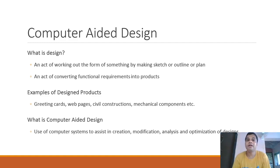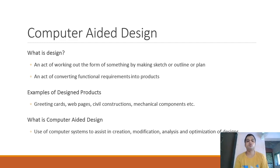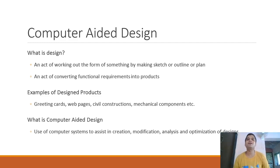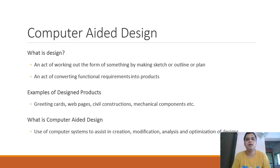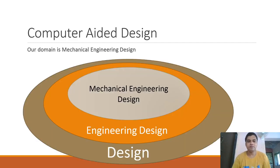Now we come to computer-aided design. Computer-aided design is the use of computer systems to assist in the creation, modification, analysis, and optimization of designs. The word 'aided' means the computer is helping to improve the design at all different stages: the creation stage, modification stage, analysis stage, and optimization stage. These are broad stages of design, and the computer helps through the development of various software tools.